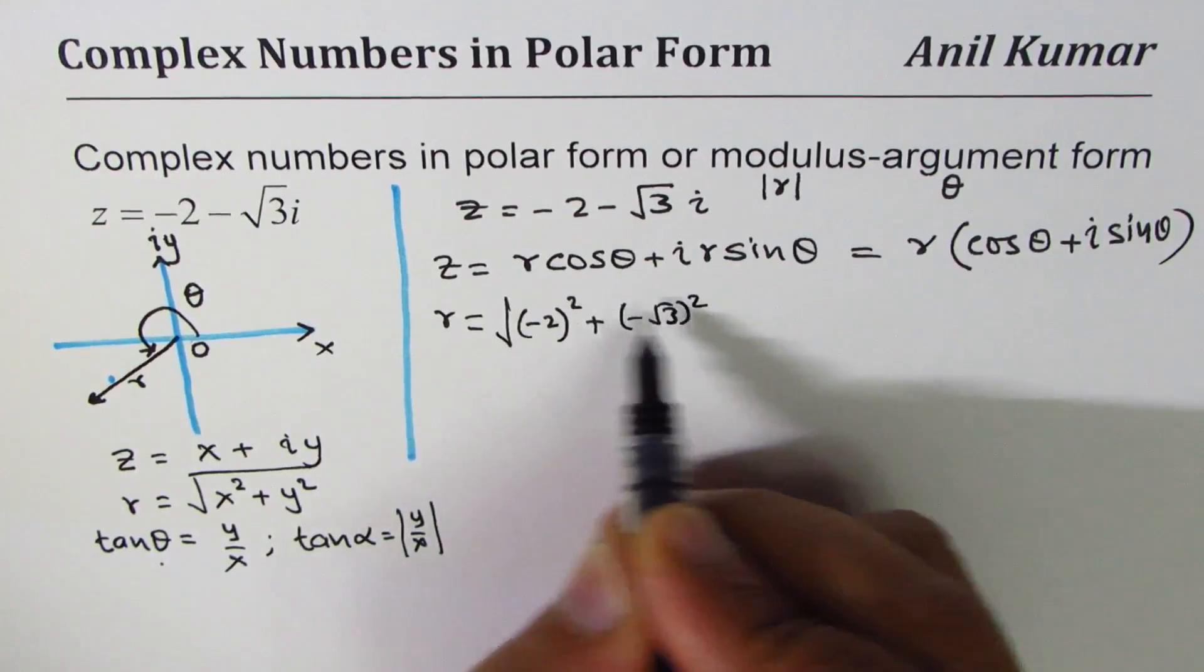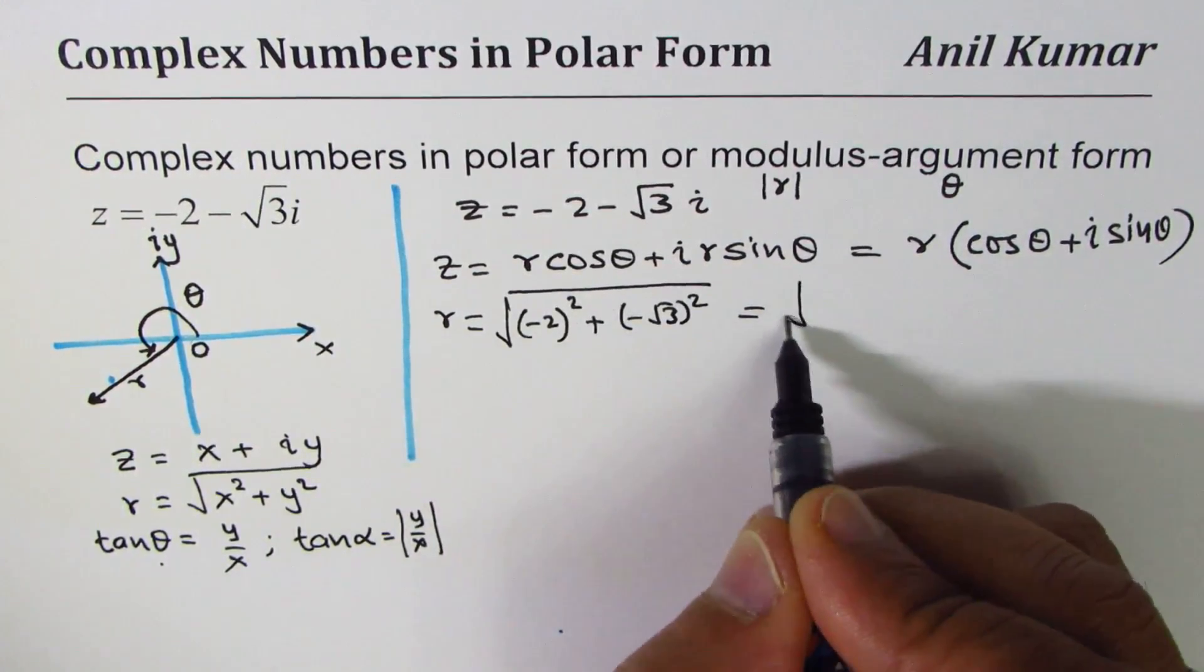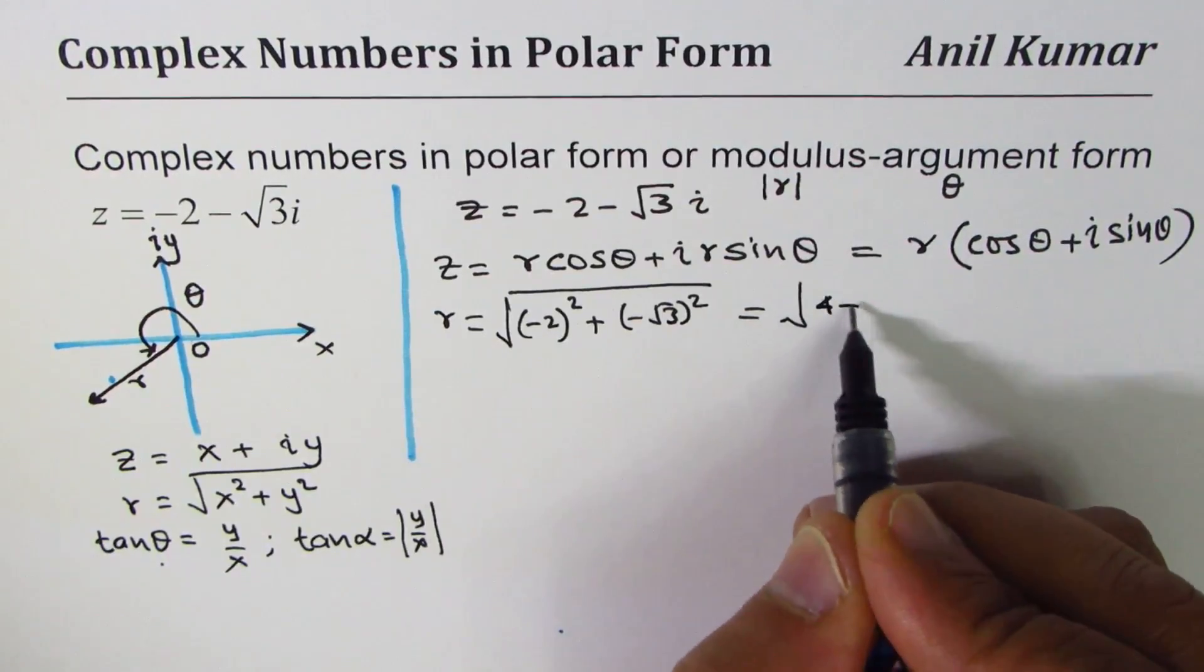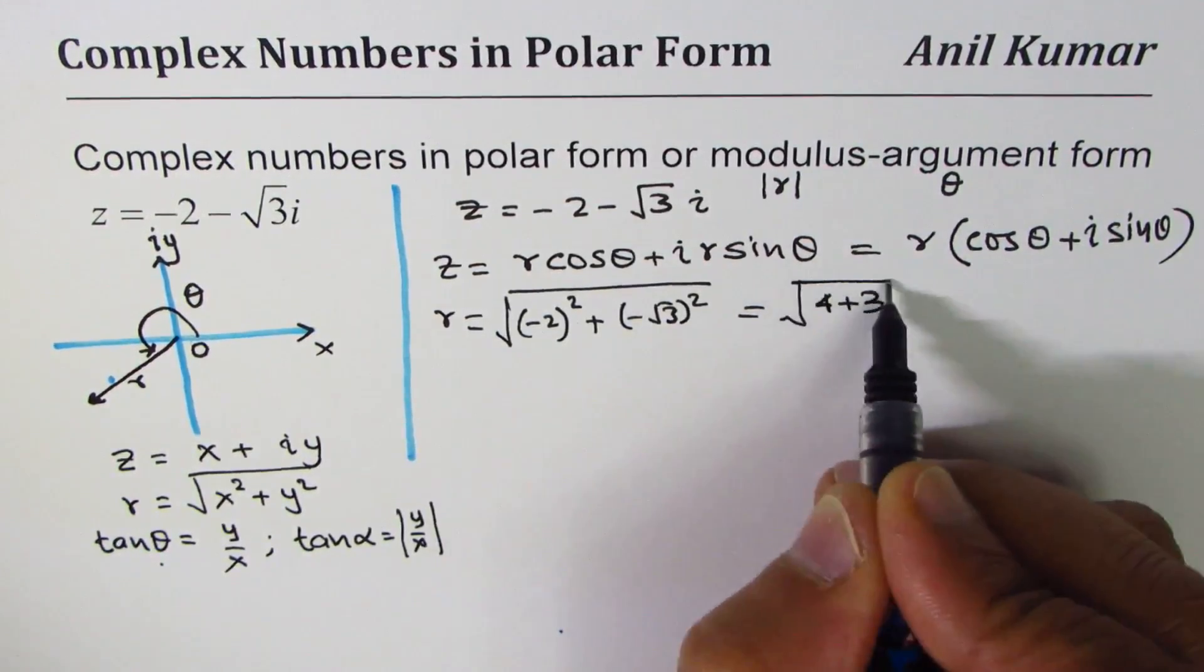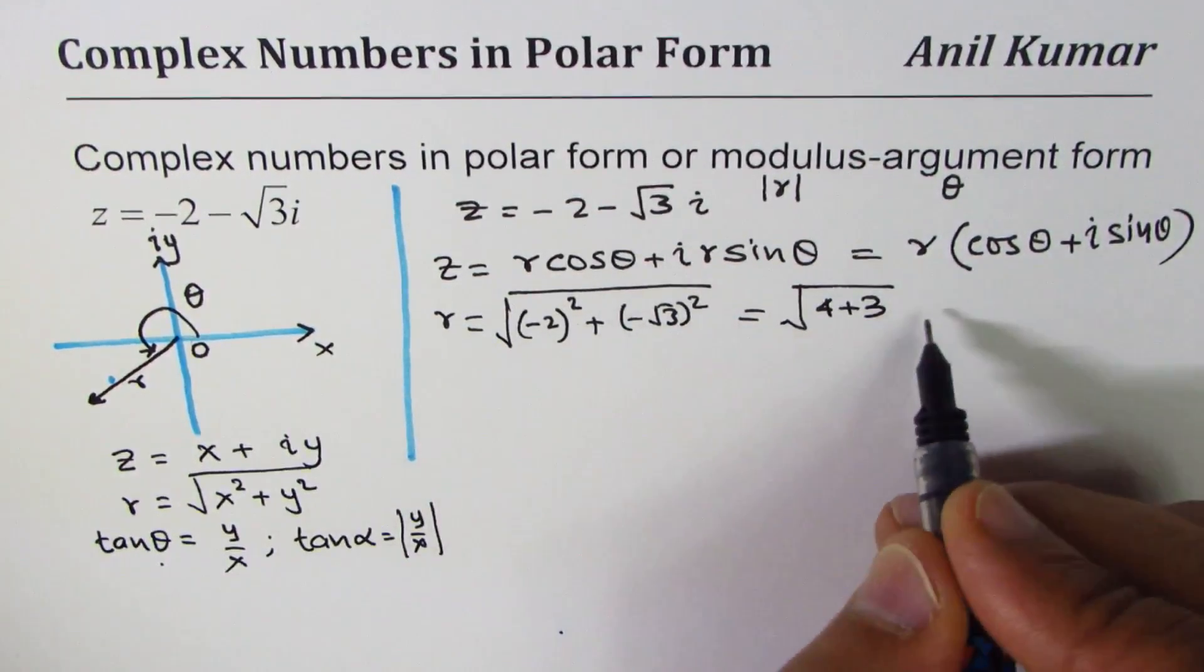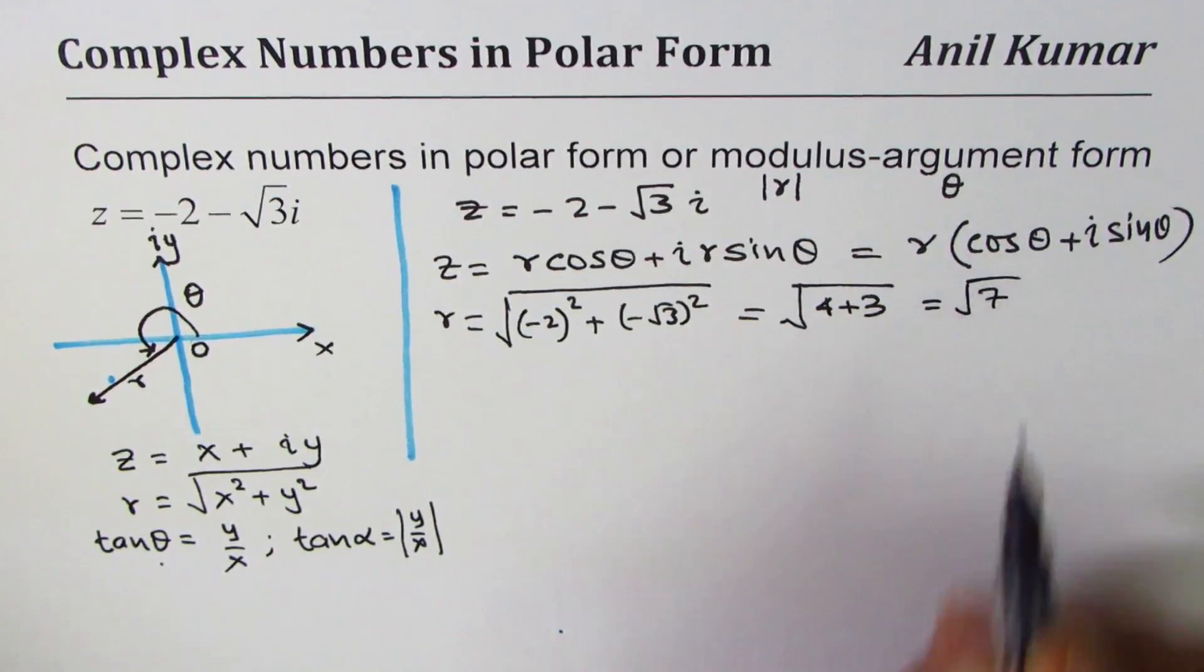Let's find r first. In this case x is -2, so it's (-2)² + (-√3)² square root, and that gives us √(4 + 3), which is √7.